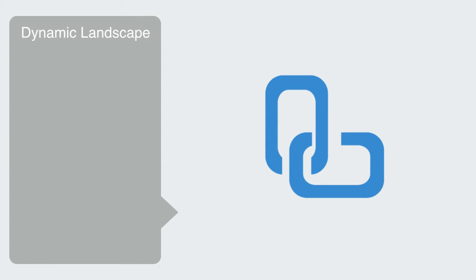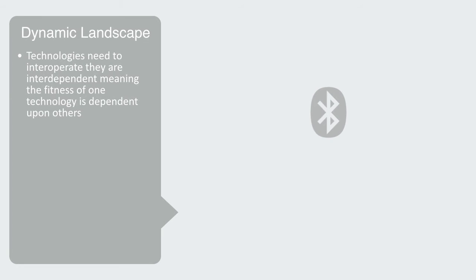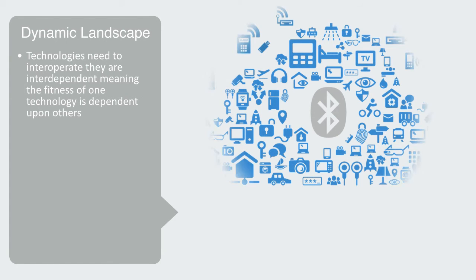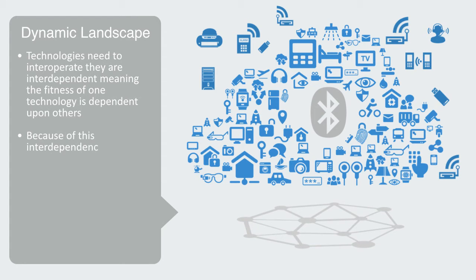Because different technologies need to interoperate, they are interdependent, meaning the fitness of one technology is dependent upon others. For example, there are over 25,000 companies building technologies with Bluetooth capabilities. If the protocol was to be significantly altered, or even discontinued, this would affect the entire ecosystem. Because of this interdependency, the landscape is not static, but in fact dancing around, in response to all the small and large changes that are being made to the individual technologies.